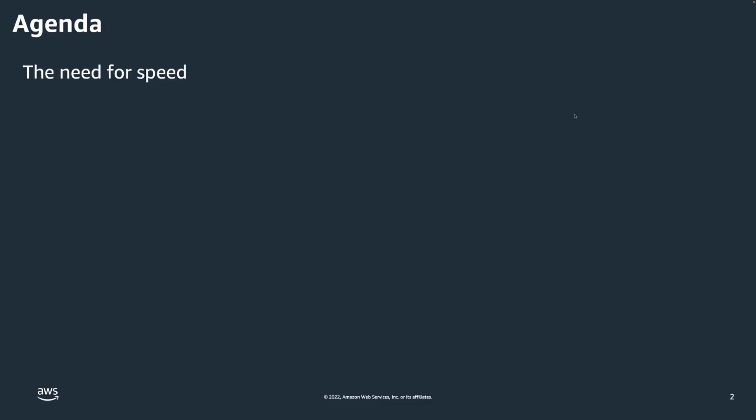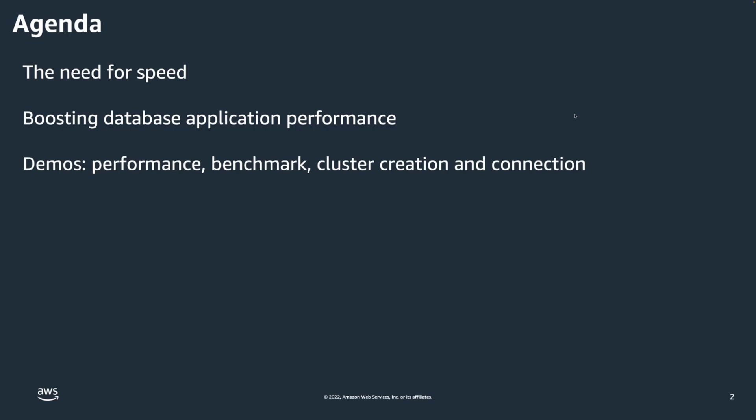What are we going to talk about today? First, we'll talk about the need for speed and why it's so important to have a high-performance environment for your customers, and we'll map that to the bottom line of the business. We'll talk about specific ways of improving database performance, and how to implement an ElastiCache distributed cache to boost that performance even further. I'll walk you through cluster creation, how to connect to the cluster, we'll run a benchmark, and then run a demo to show you the type of performance you can achieve with just a simple application.